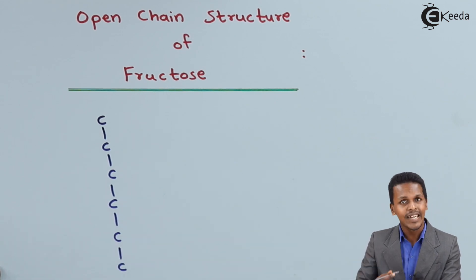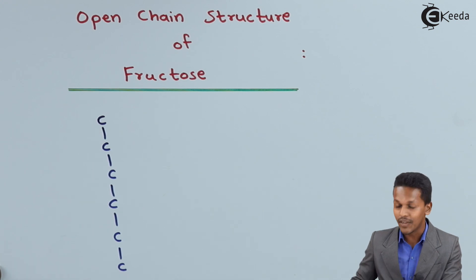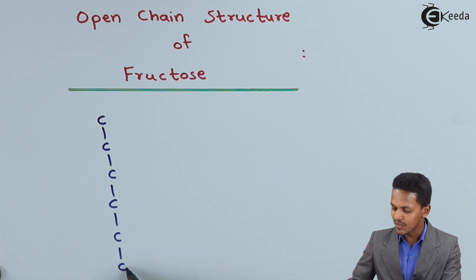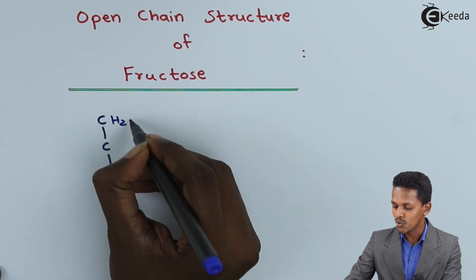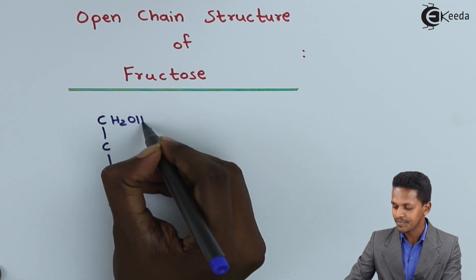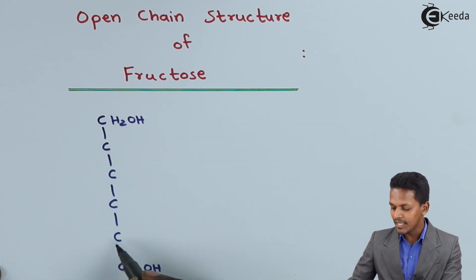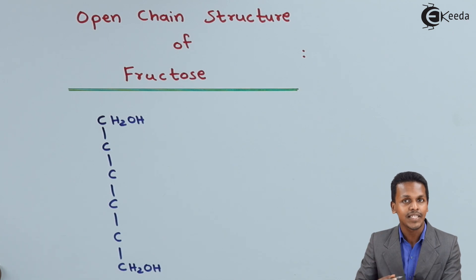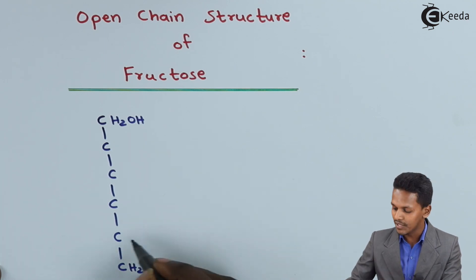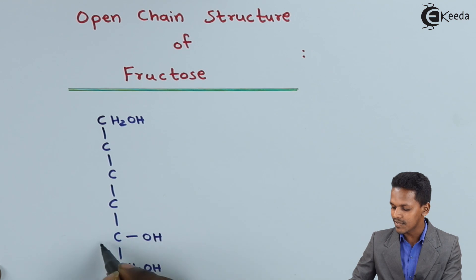Since it is a polyhydroxy ketone, it will consist of multiple OH groups. Starting with the last one, this is CH2OH, and even the first carbon atom will be CH2OH. While the rest of the carbon atoms will be satisfied with the valency of OH as well as H. So in this case, the OH is on the right-hand side.